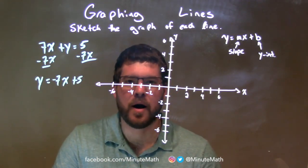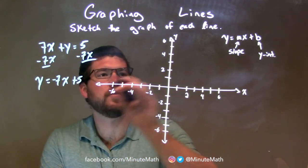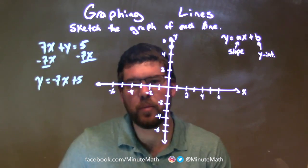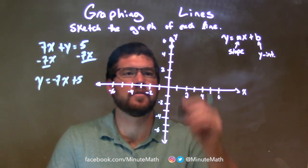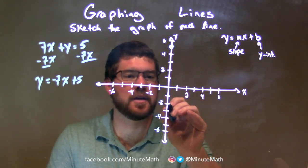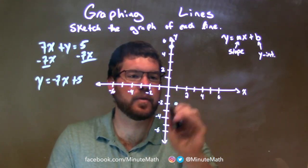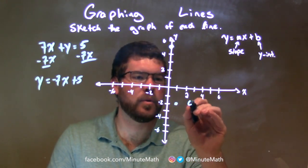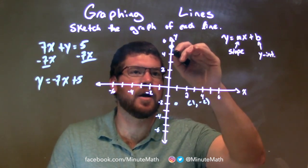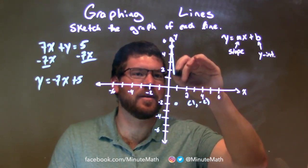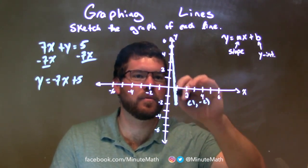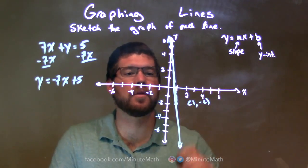I have my slope and my y-intercept easily identified. 5 is my y-intercept — that's right here at 5. My slope is negative 7, so we're going to go down 7 units — 1, 2, 3, 4, 5, 6, 7 — over 1. Right there. That coordinate point would be 1 comma negative 2. So we connect these two dots to make a line. And there we have our little line.